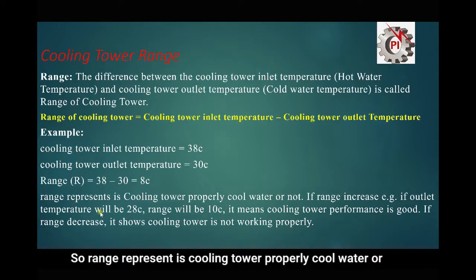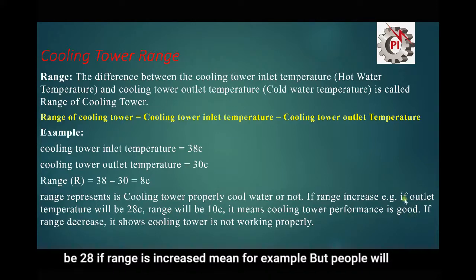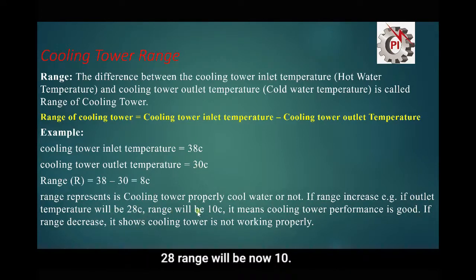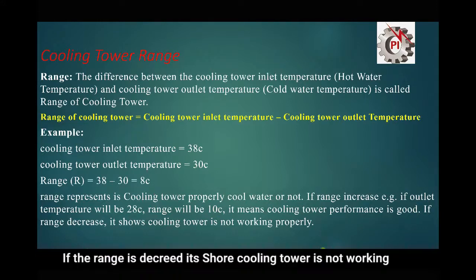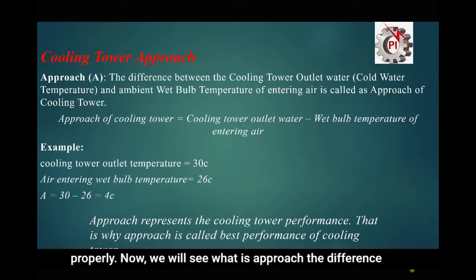The range represents whether the cooling tower is properly cooling water or not. If the range increases — for example, if the outlet temperature drops from 30°C to 28°C — the range becomes 10°C, meaning the cooling tower performance is good. If the range decreases, it shows the cooling tower is not working properly. Now we will see what is approach.